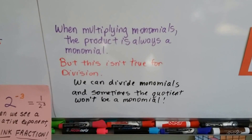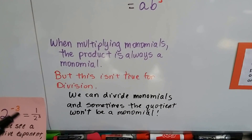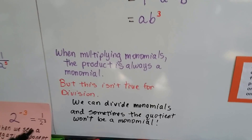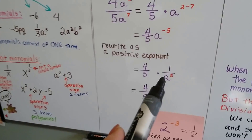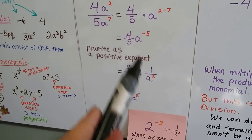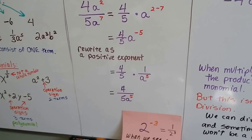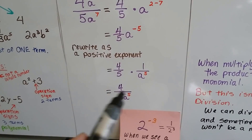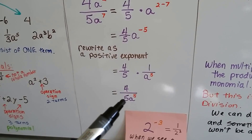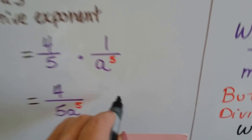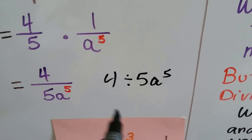When multiplying monomials, the product is always a monomial. But this isn't true for division — we can divide monomials and sometimes the quotient won't be a monomial, just like 1 over x, which is 1 divided by x. If we get a negative exponent written as a fraction, it has a division sign in it, which makes it not a monomial — it has an operation sign in it. This is 4 divided by 5a to the fifth power.